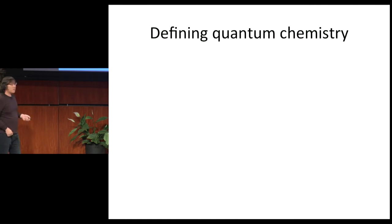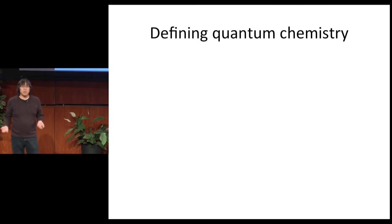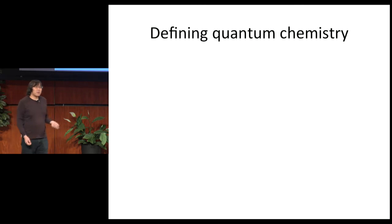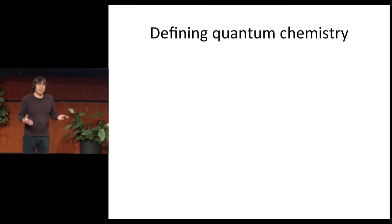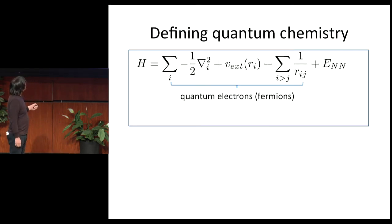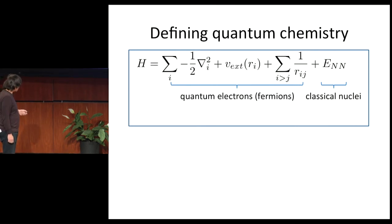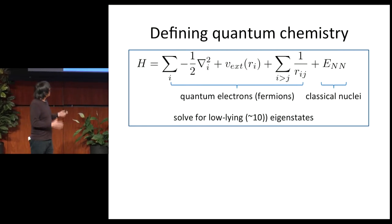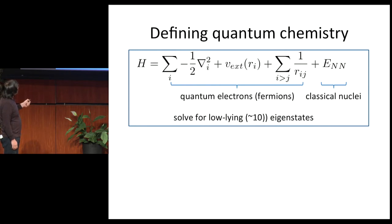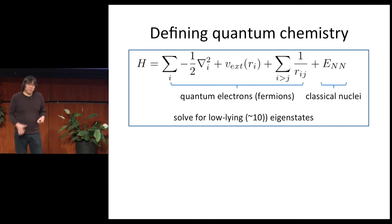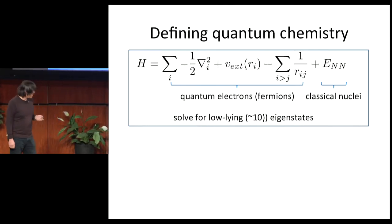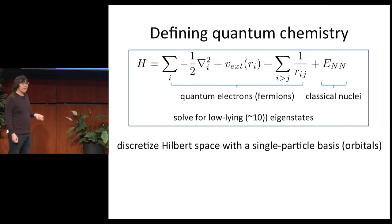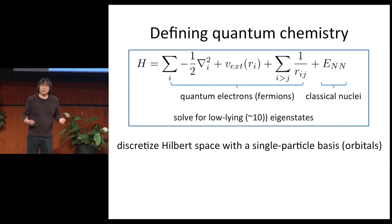Let's first define the quantum chemistry problem. Quantum chemistry is just the quantum mechanics of a series of electrons and nuclei. The nuclei are very heavy, so in almost all quantum chemistry simulations you assume they behave like classical particles. You write down the Hamiltonian — it contains a part for the quantum electrons, and the nuclei just exert an external classical potential. The primary goal, the simplest task, is finding the low-lying eigenstates of this Hamiltonian — for example, the ground state or a few excited states. To make it suitable for computation, we discretize the problem by introducing a single-particle basis known as orbitals, and the Hamiltonian then assumes its familiar second-quantized form containing up to quartic interactions.